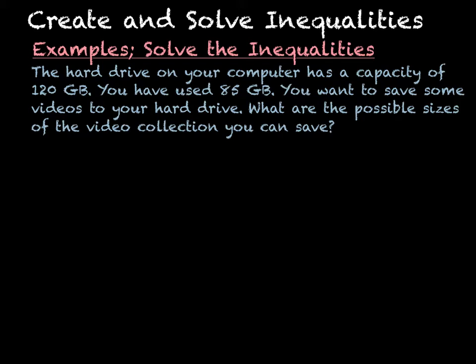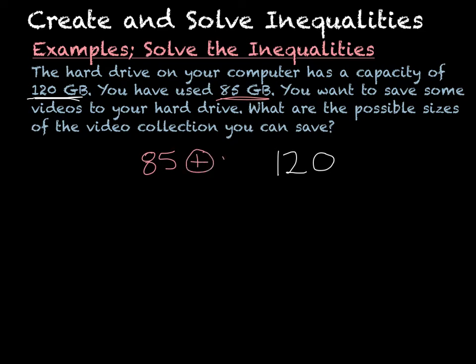The first thing we want to do is understand what we're reading. You have a total of 120 gigabytes, and you've already used 85. I already know that I can't use that 85 for my videos, but I want to add something to it because I'm going to add videos to the hard drive. It cannot be more than 120, so I'm going to put a less than or equal to symbol, because it could equal 120.